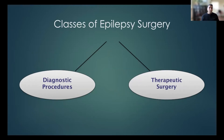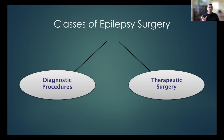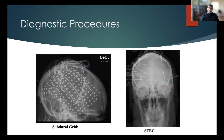There are two broad categories of epilepsy surgery. First, we have diagnostic procedures in which we implant electrodes — these are listening procedures where we wait and detect where the seizures come from. Then we can proceed to therapeutic surgeries, which we can discuss more in a bit.